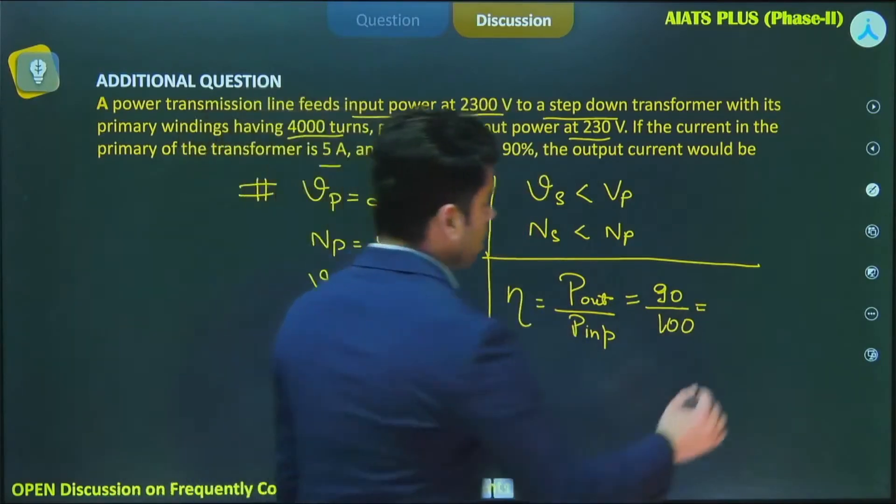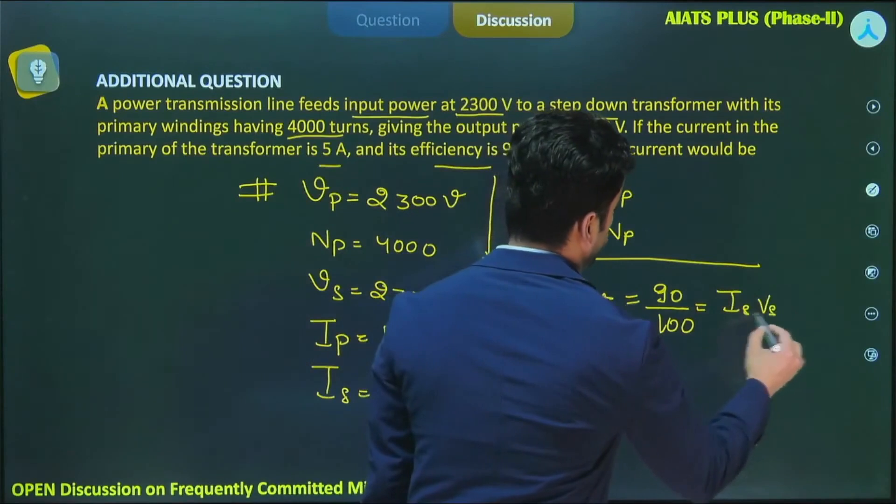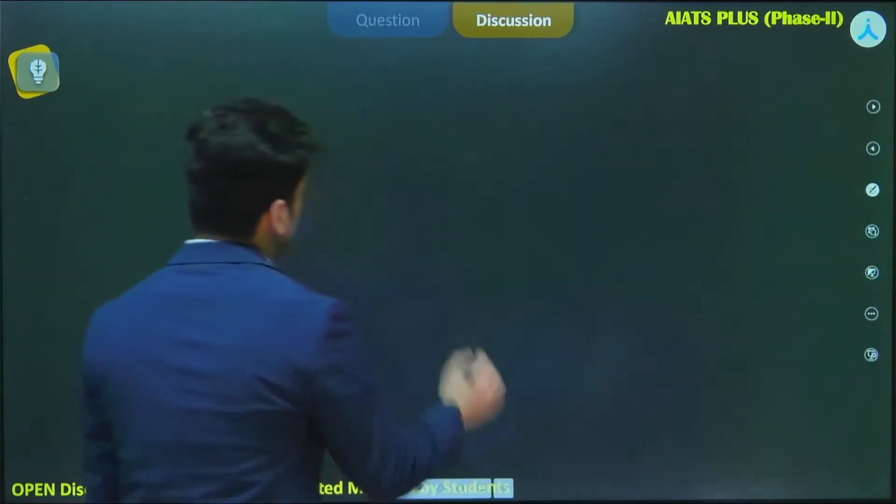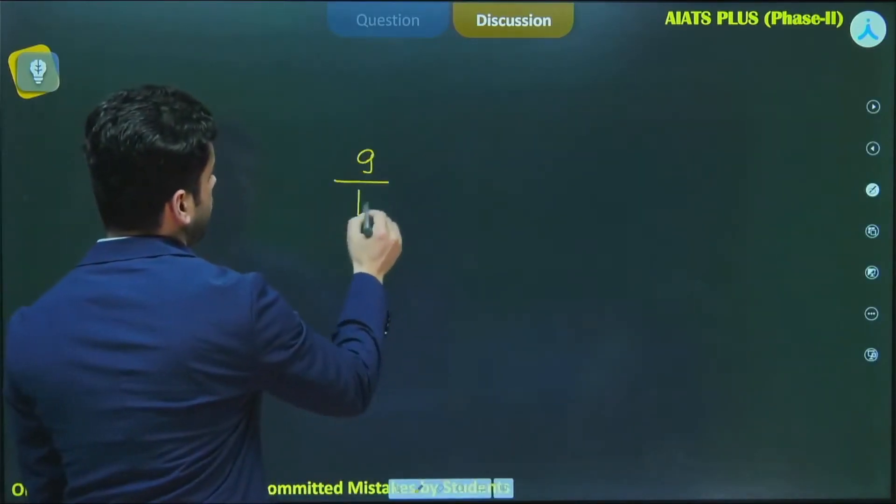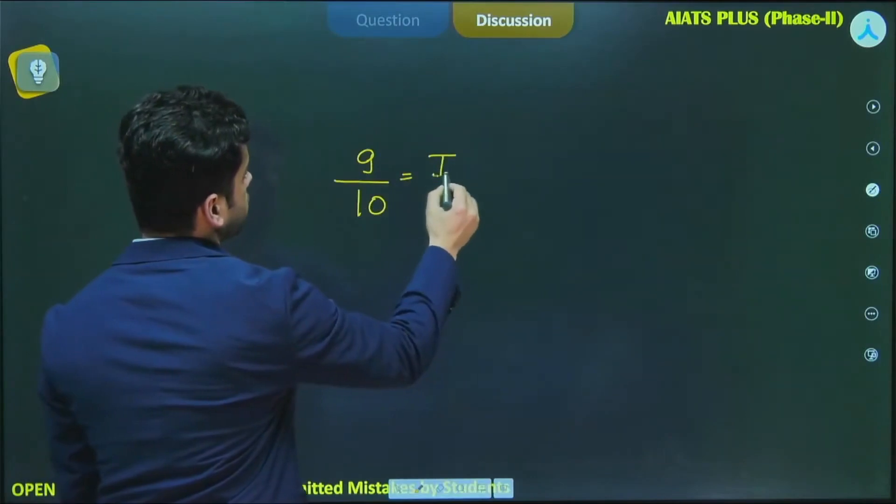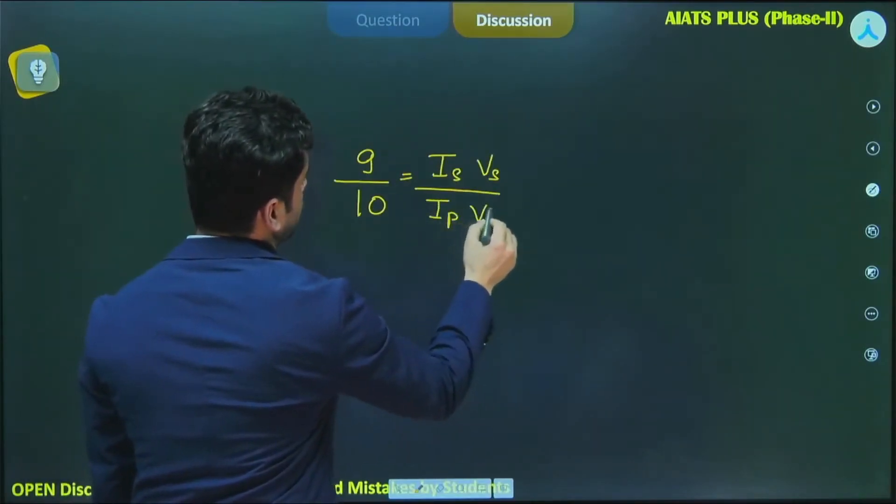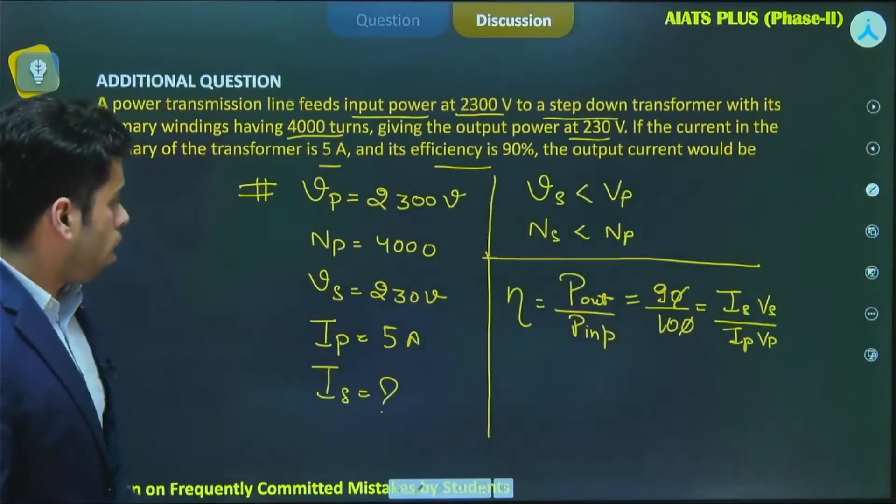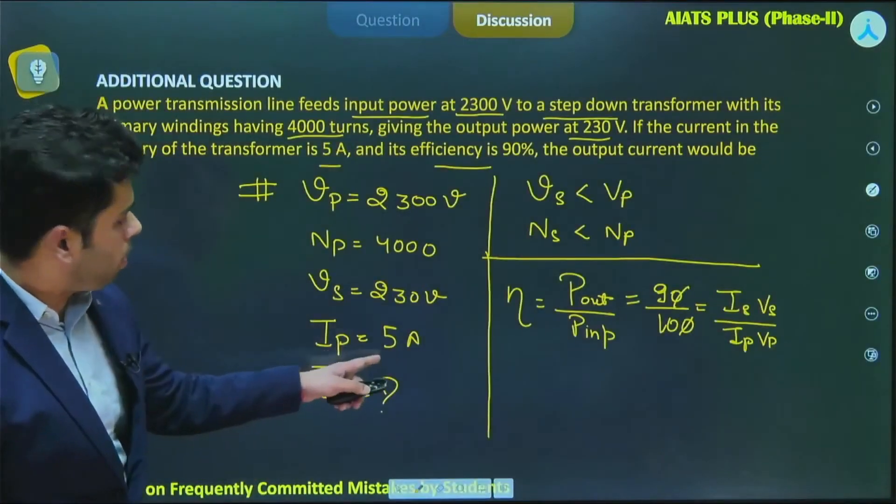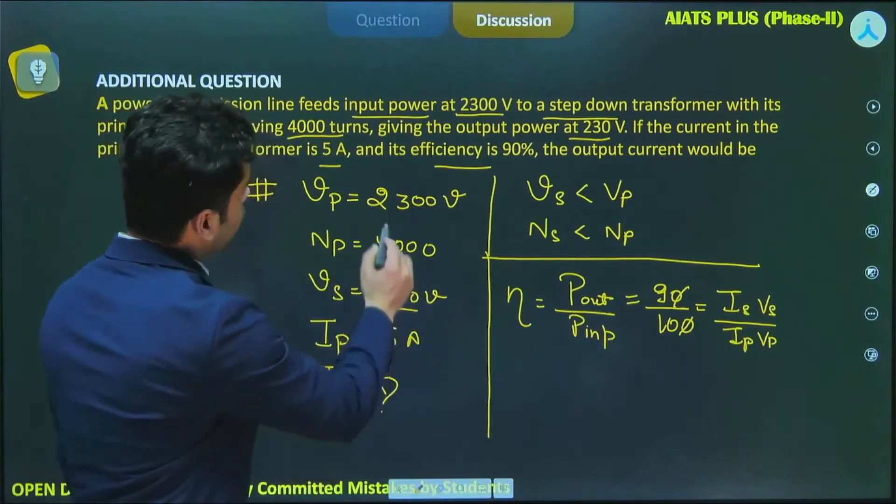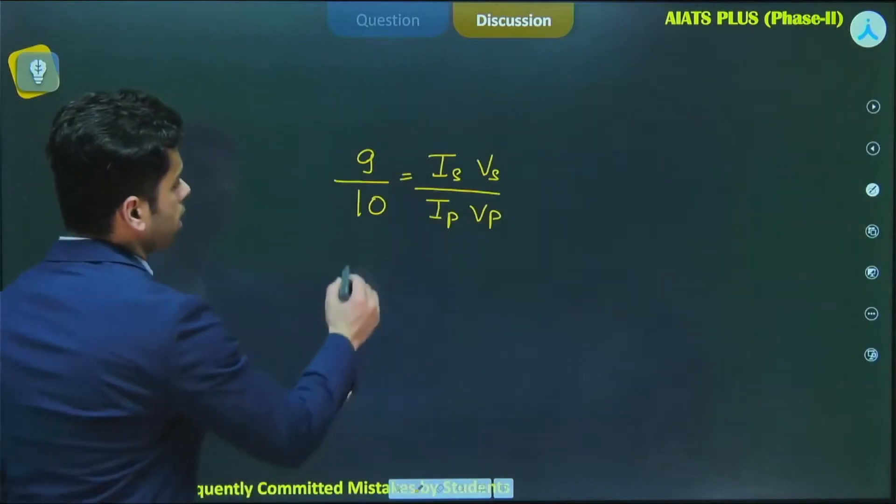9 by 10 equals Is Vs upon Ip Vp. So I can write that 9 by 10 equals Is Vs upon Ip is 5 ampere, Vs is 230 volt and Vp is 2300 volt.